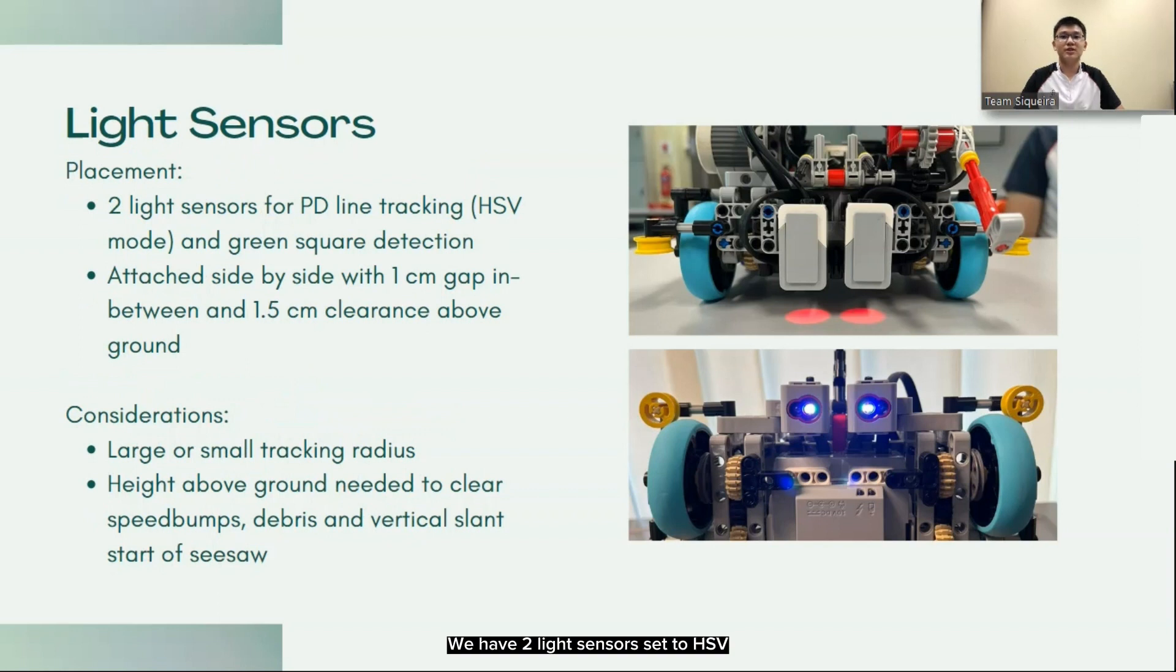We have two light sensors set to HSV mode used for PD line tracking and junction detection. There's a 1cm gap between the sensors with both having a 1.5cm clearance off the ground. The gap between the sensors gives us a preferred line tracking radius and the 1.5cm gap above the ground allows us to clear speed bumps, debris, and other types of terrain smoothly.